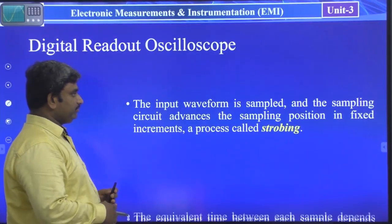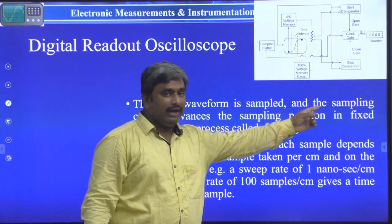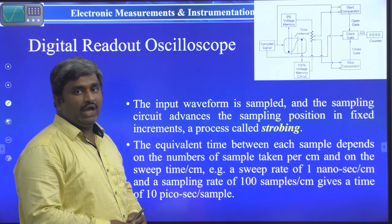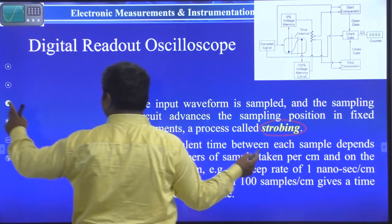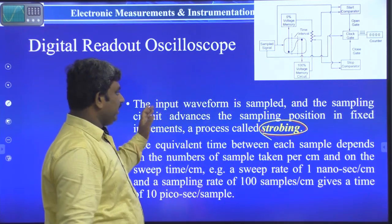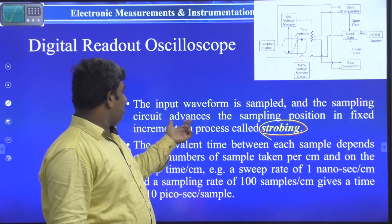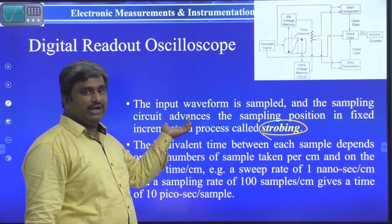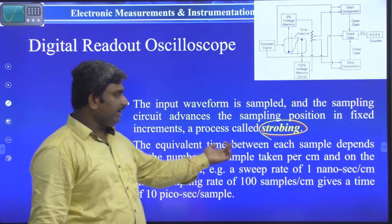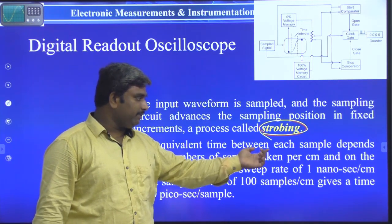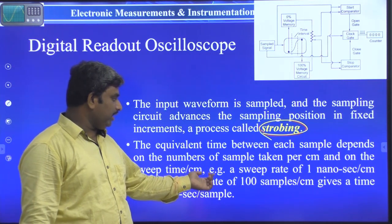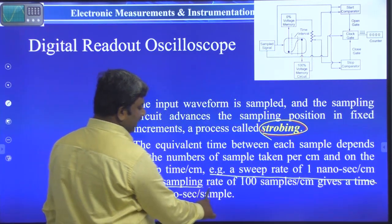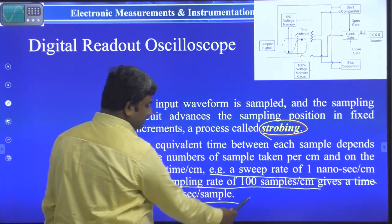The input waveform is sampled and the sampling circuit advances the sampling position in fixed increments — a process called strobing. The equivalent time between each sample depends on the number of samples taken per centimeter and on the sweep time per centimeter. For example, a sweep rate of 1 nanosecond per centimeter and a sampling rate of 100 samples per centimeter gives a time of 10 picoseconds per sample.